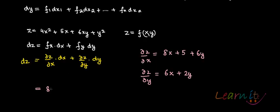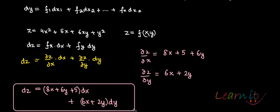You will have 8x plus 6y plus 5 into dx plus 6x plus 2y into dy. So this is equal to dz. This is the way you find out total derivative.